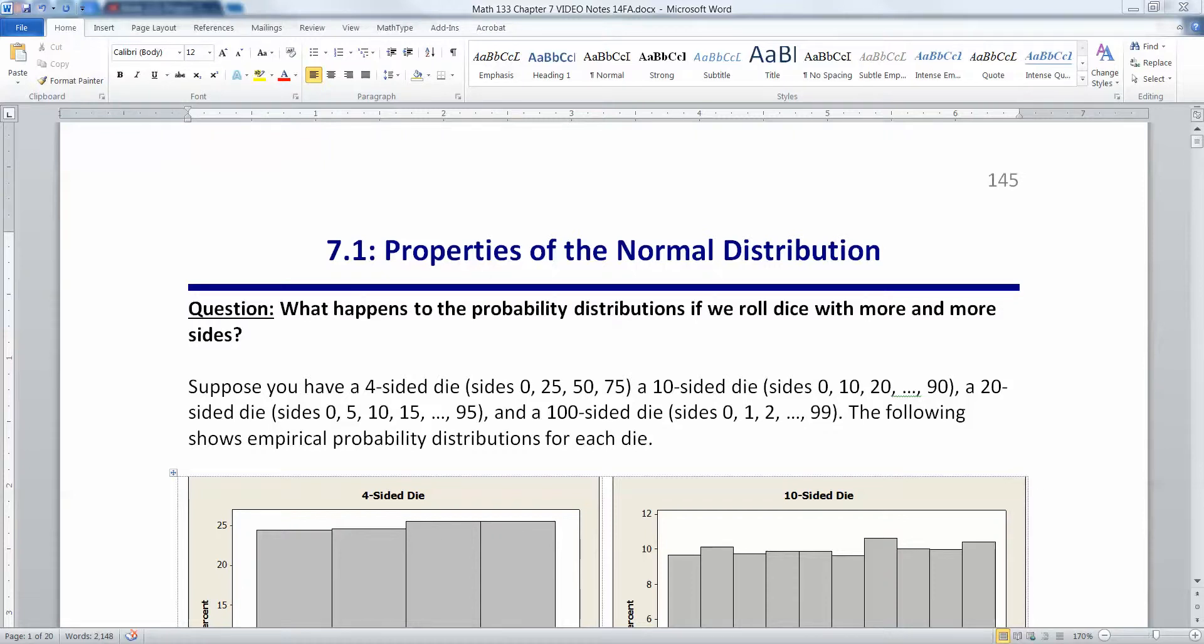In Chapter 7, we need to move away from a discrete distribution and towards continuous distributions. So let's ponder that for just a second with this example.